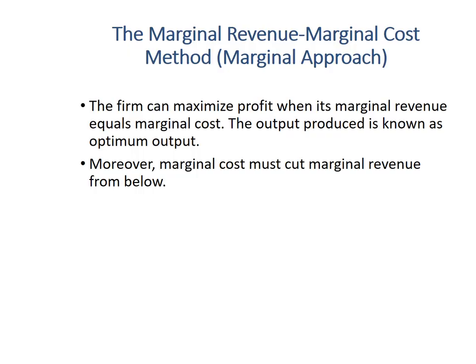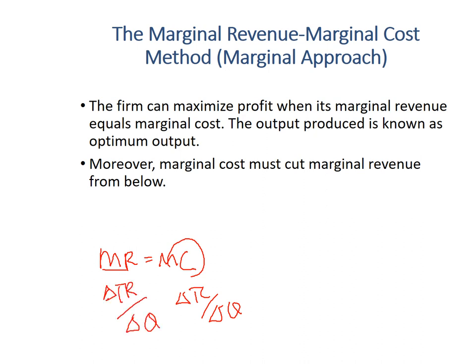The second approach is the Marginal Revenue–Marginal Cost (MR = MC) method, also called the marginal approach. The firm can maximize profit when marginal revenue equals marginal cost. The output produced at this level is known as the optimum output or profit-maximizing output. To calculate MC: change in TC divided by change in Q. Marginal revenue: change in total revenue divided by change in Q. The marginal cost curve must cut the marginal revenue curve from below.